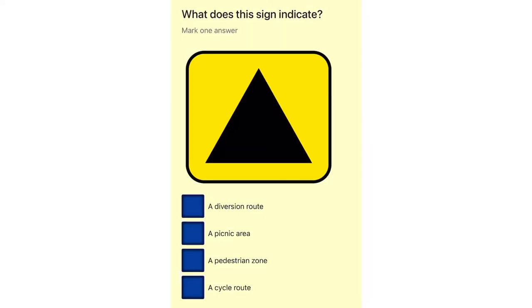What does this sign indicate? A diversion route. A picnic area. A pedestrian zone. A cycle route.